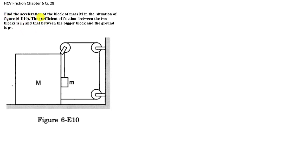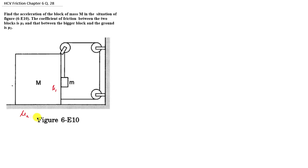The question is: find the acceleration of the block of mass capital M in the situation shown in the figure. The coefficient of friction between the two blocks is mu1, and the coefficient between the bigger block and the ground is mu2.